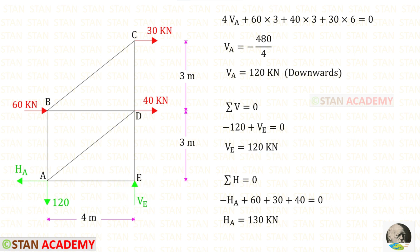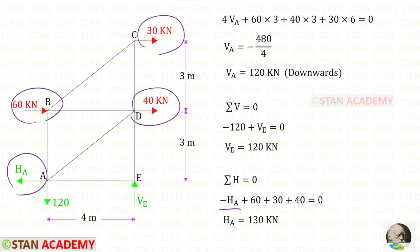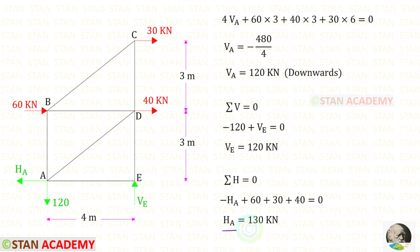Let us apply Sigma H = 0 and find HA. HA is acting towards the left side, so it will be negative. These three loads are acting towards the right side, so all three of them are positive. For HA, we will get a positive value — that means our assumption is correct, and HA is acting towards the left side.